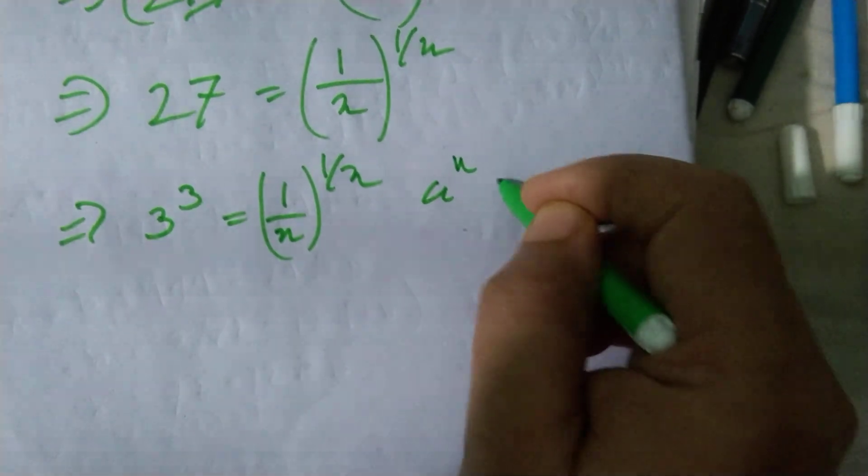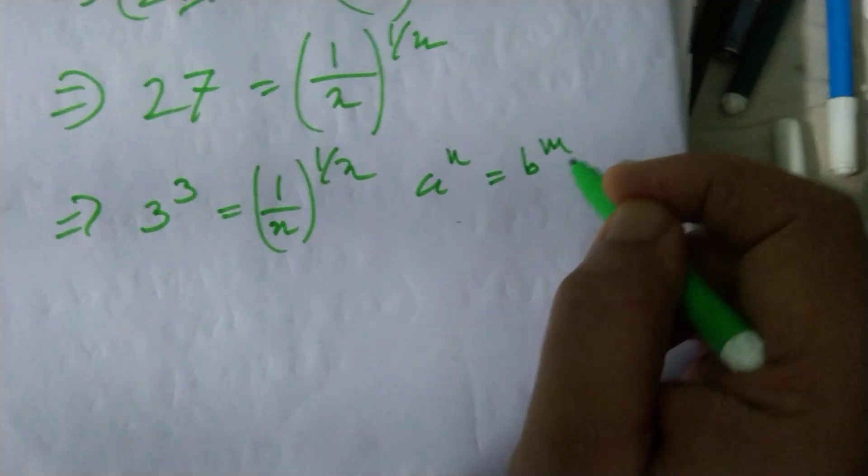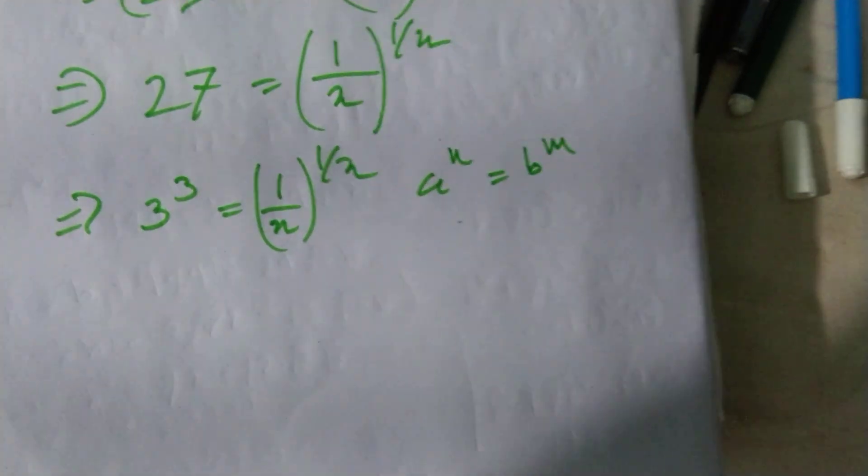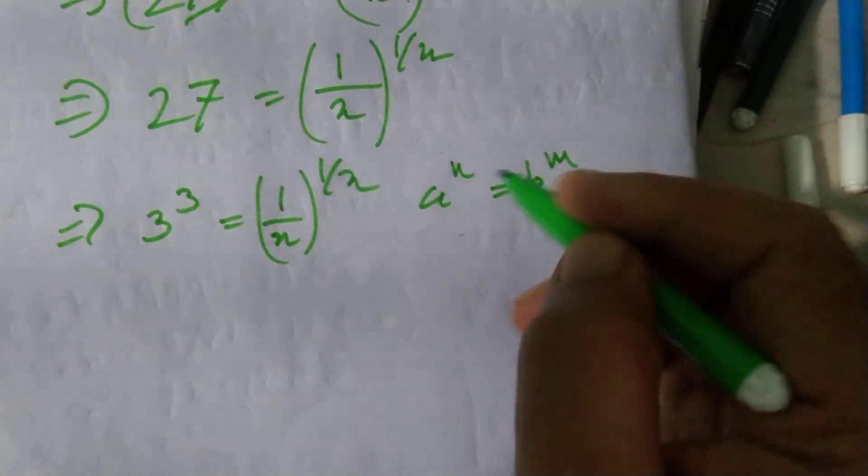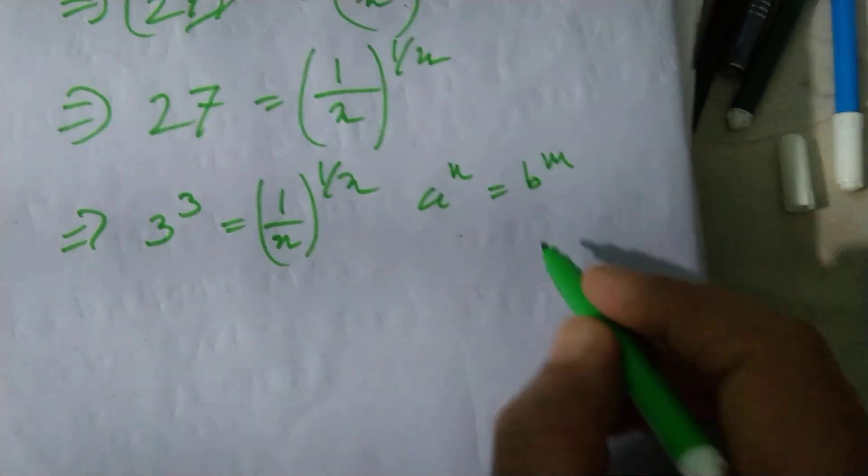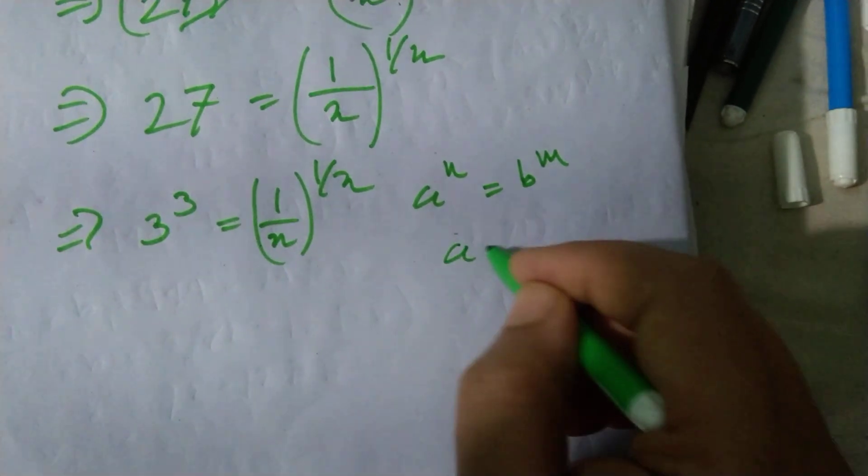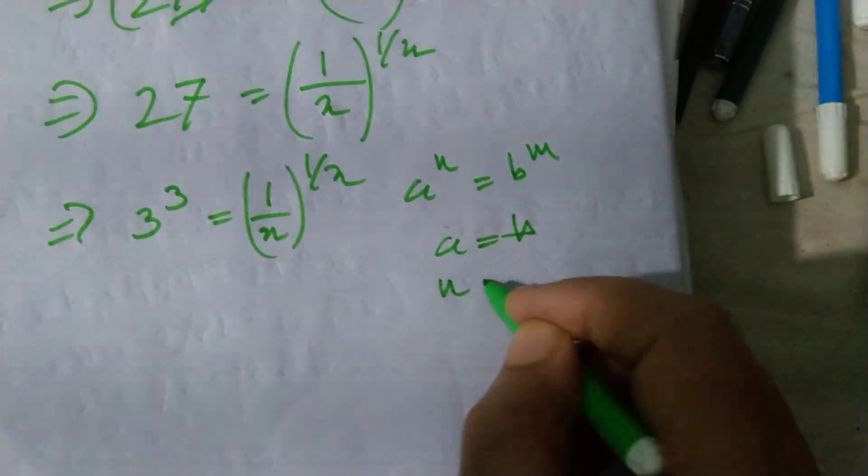We know a to the power n is equal to b to the power n. Let me finish. a to the power m and b to the power n. So a equals to b and n equals to m.